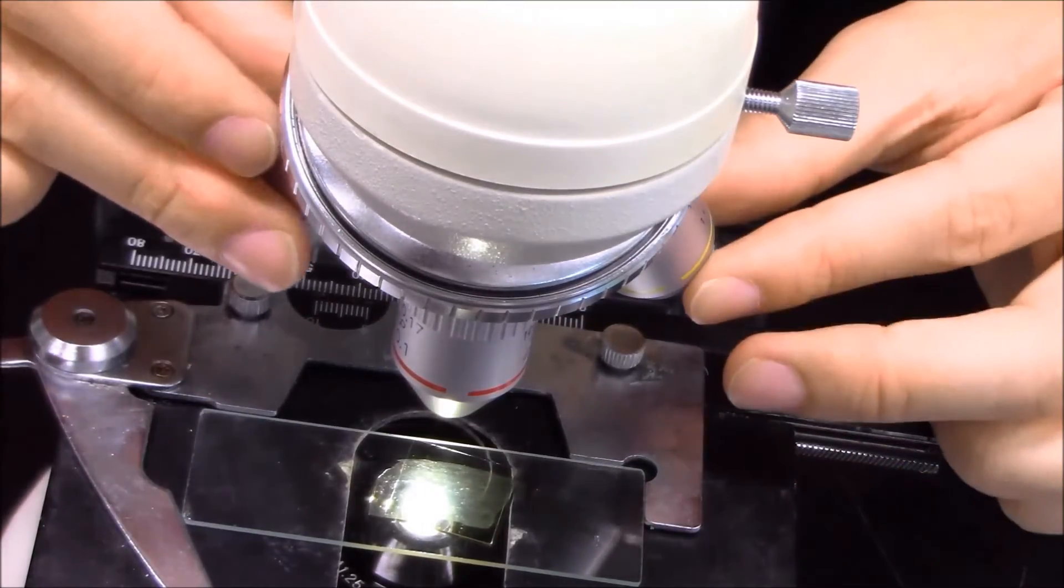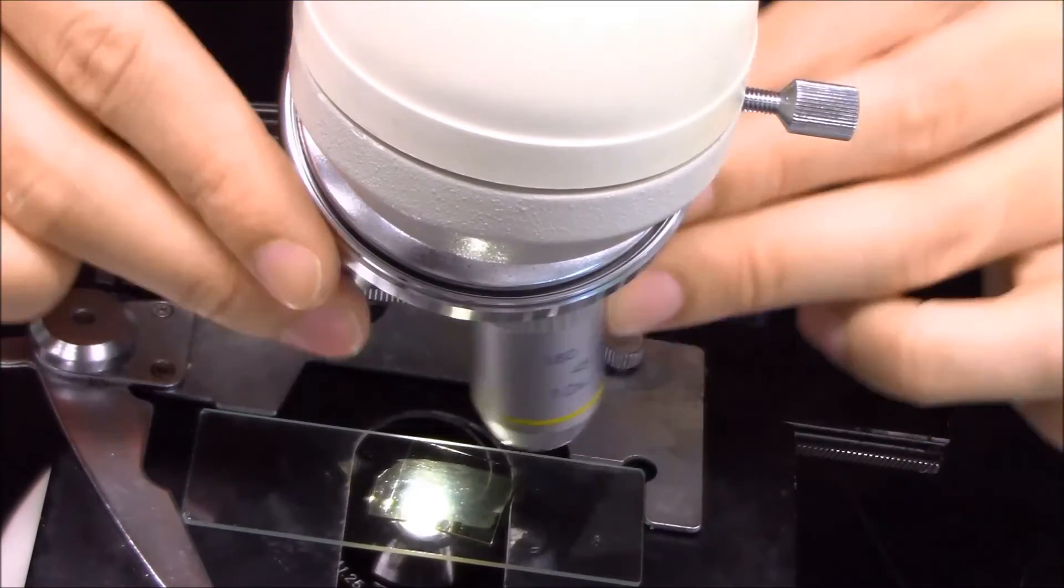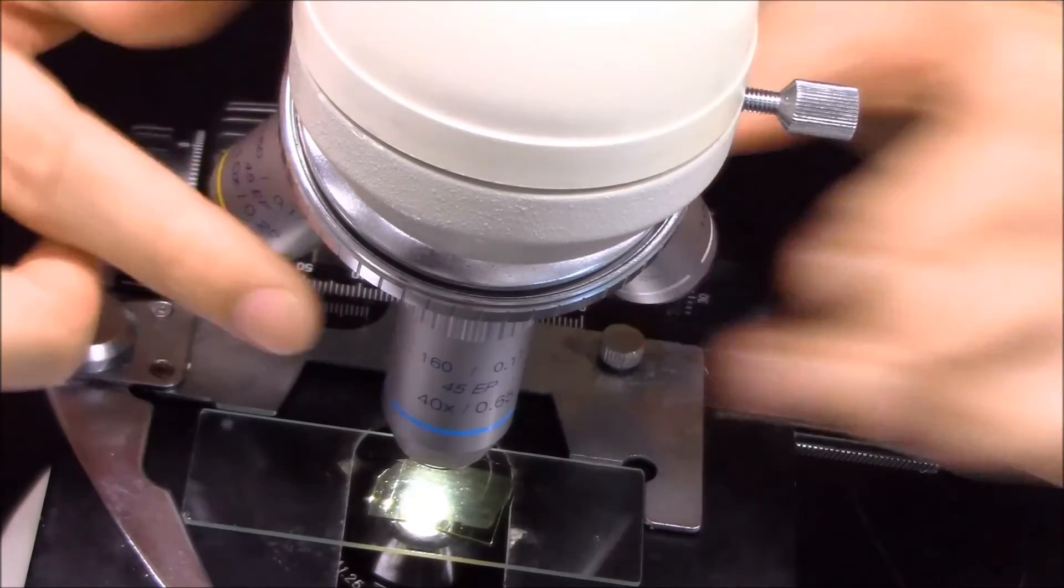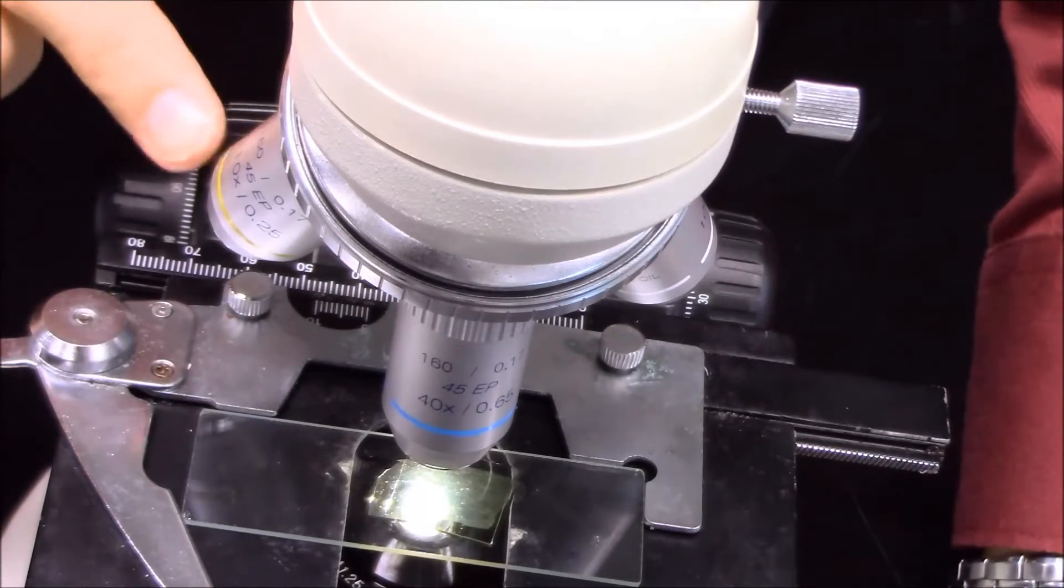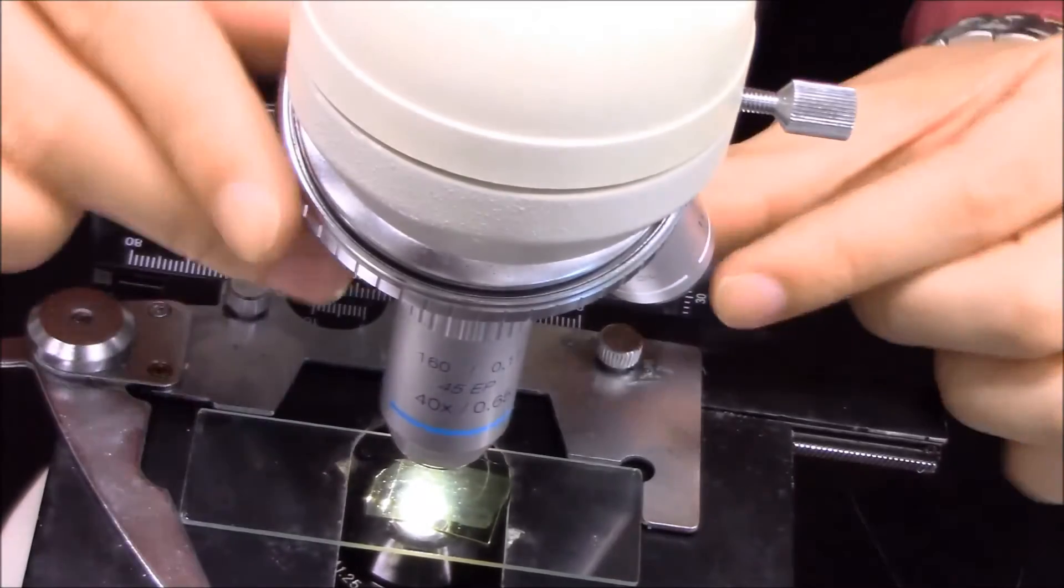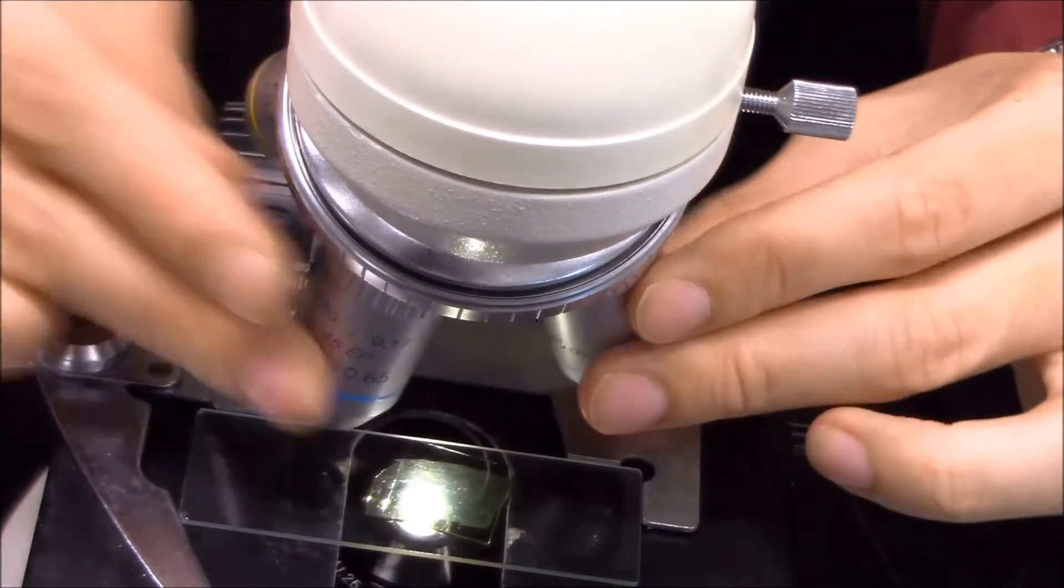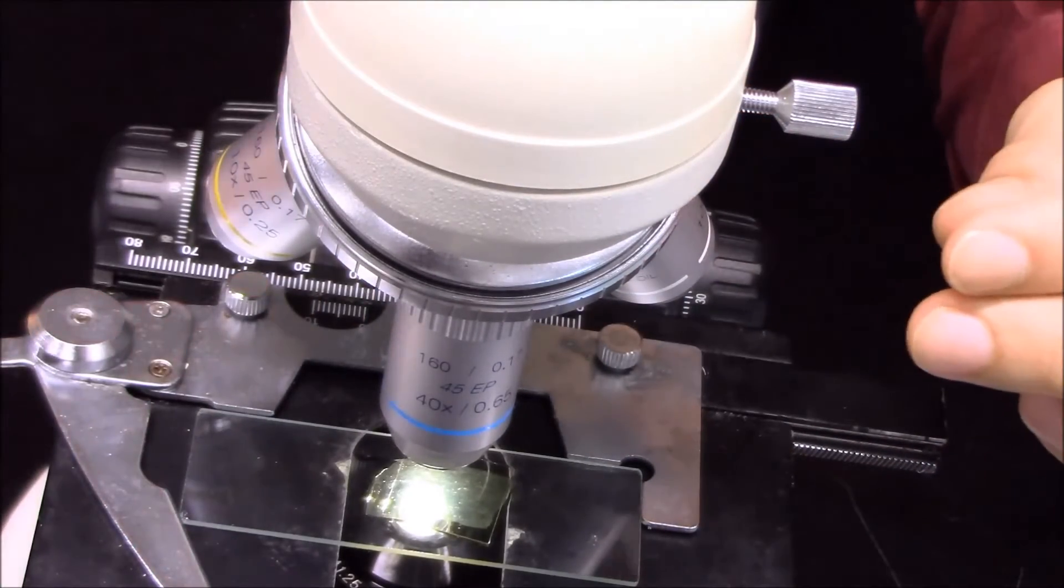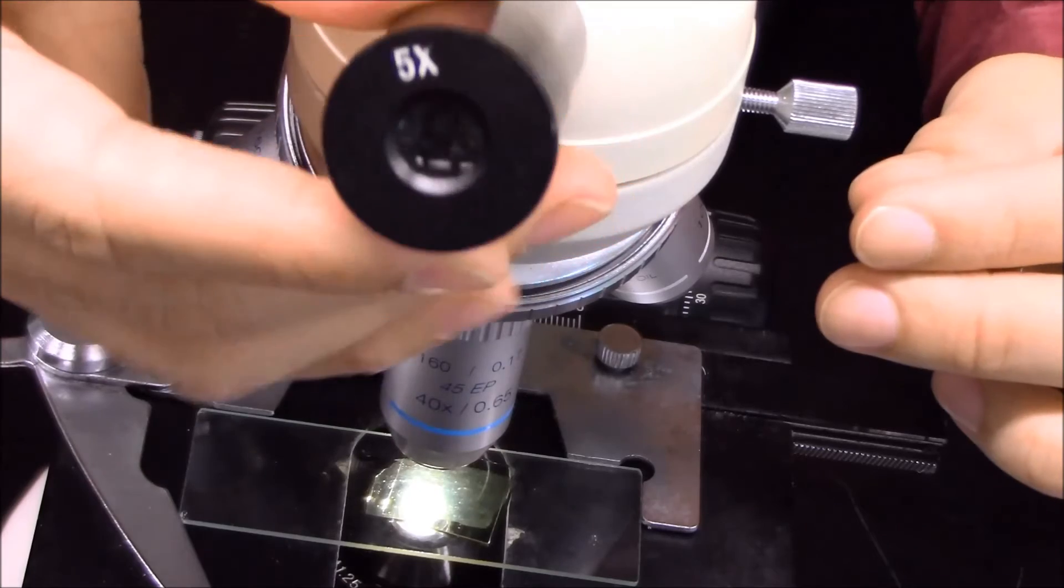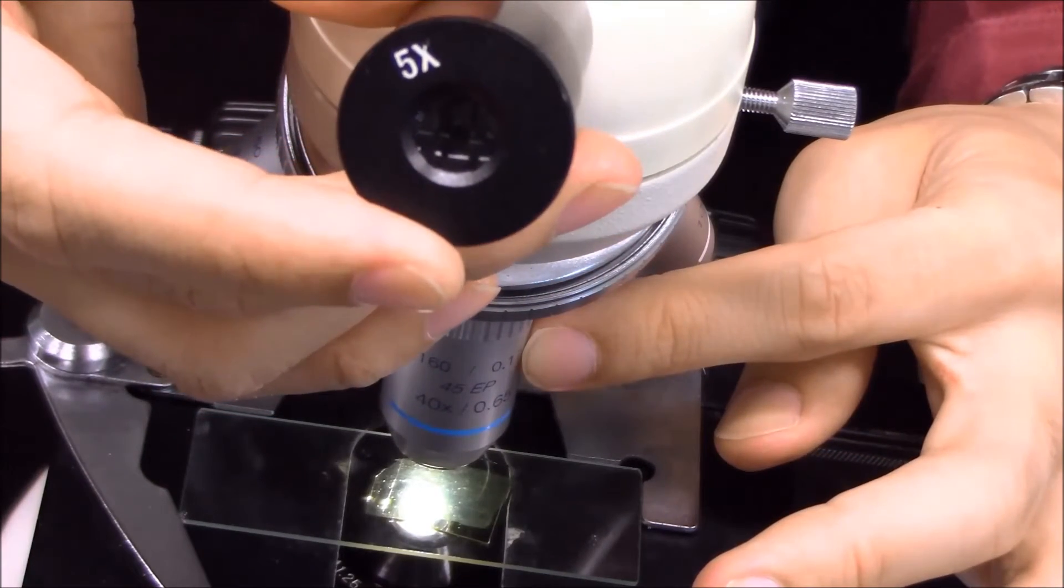And then you can change to 40x, the blue one. Not the 10x yellow one, and also not the silver one. The silver one is 100x. What we use is the blue one, 40x. So the total magnification scale will be 5 times 40, so that would be 200x.